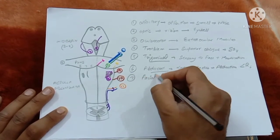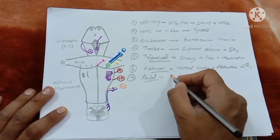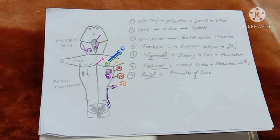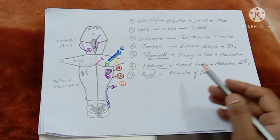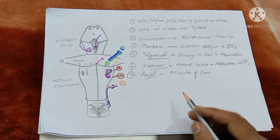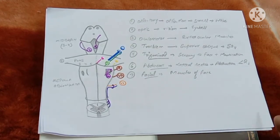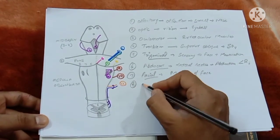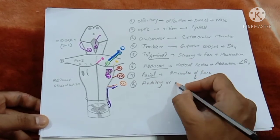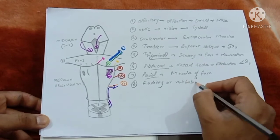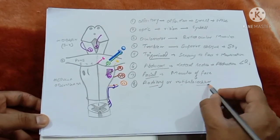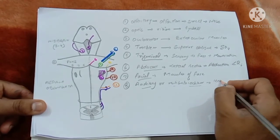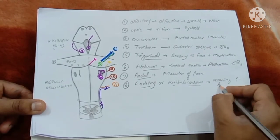The seventh is called facial because it has to do something with the face — it supplies the muscles of the face. It also has many other functions: its fibers relay in the submandibular ganglion for the secretion of the submandibular and sublingual glands, and it is also sensory to the area posterior to the ear. We will discuss cranial nerves one by one in detail on another day. The eighth is called auditory or vestibulocochlear. The vestibular apparatus and cochlear apparatus are located in the inner ear, so it is related with hearing and balance.